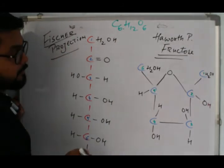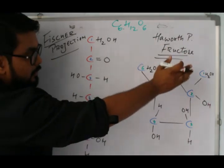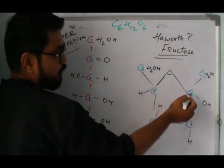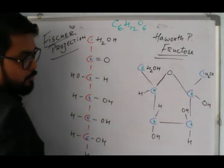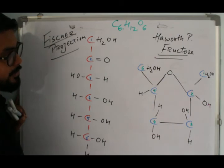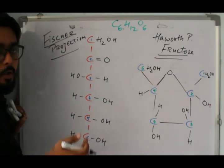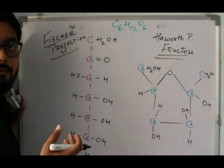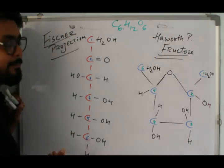So this is the Fischer projection of fructose, and this is the Haworth projection. We have carbons one, two, three, four, five, six. Both the structures of glucose and fructose are different from each other. In the next lecture, we will talk about combining two structures of glucose together to form maltose.